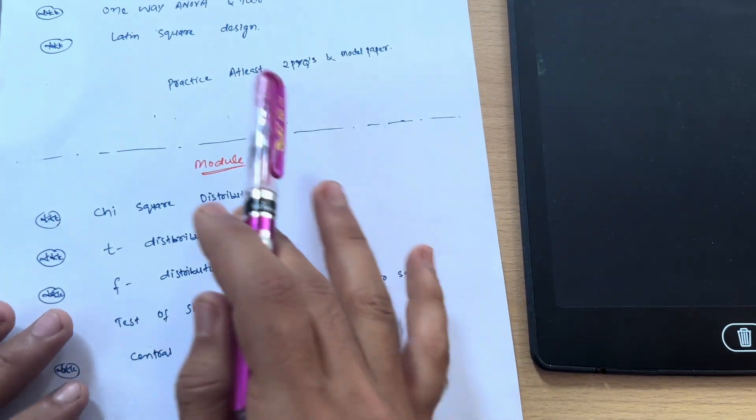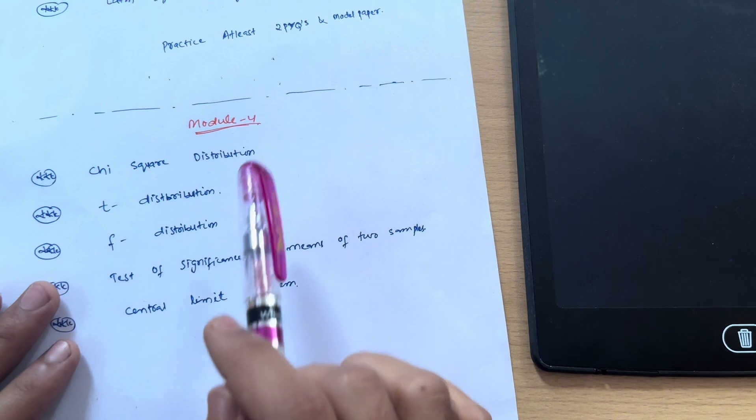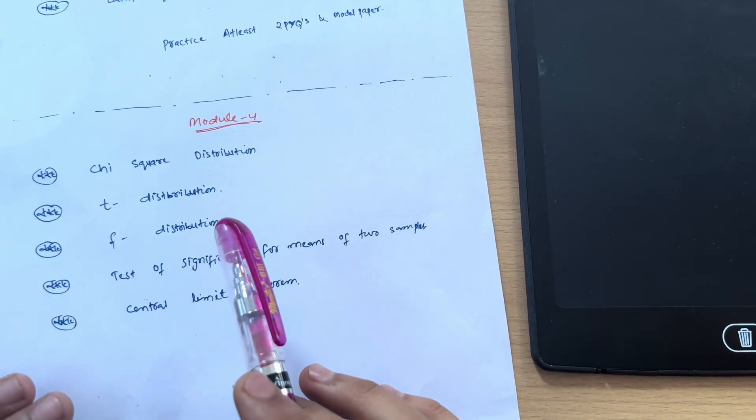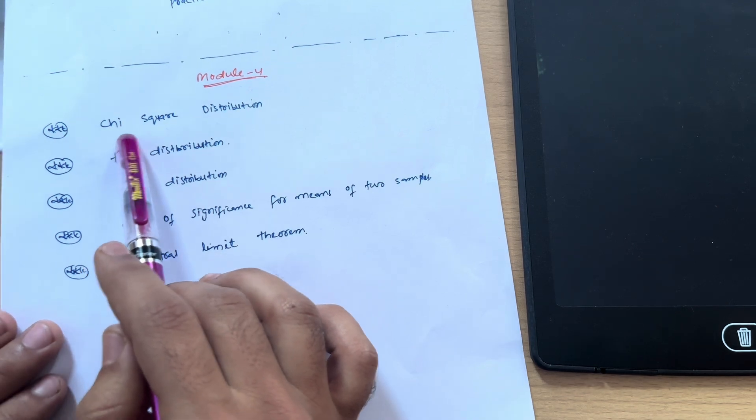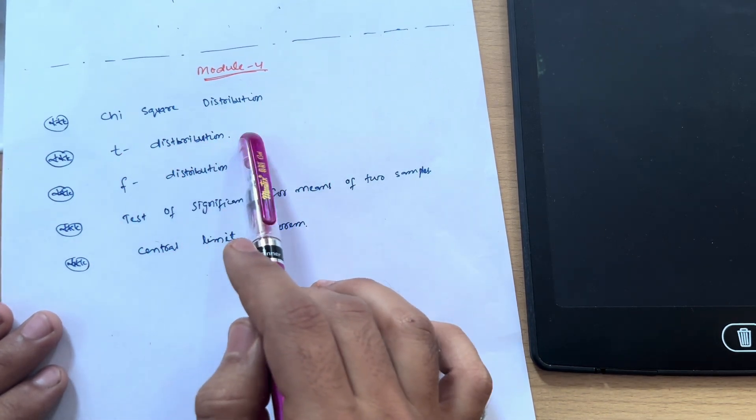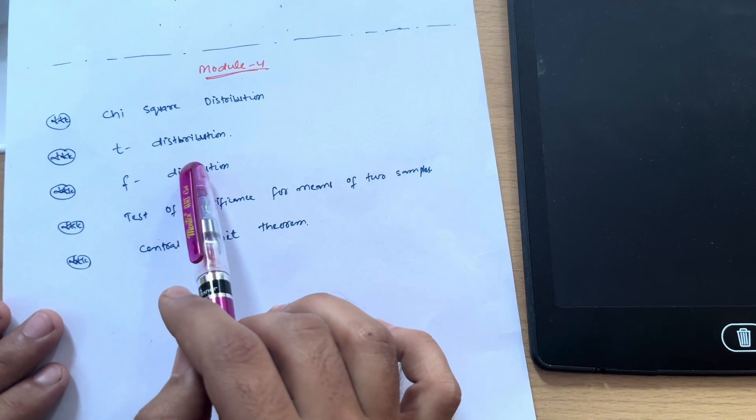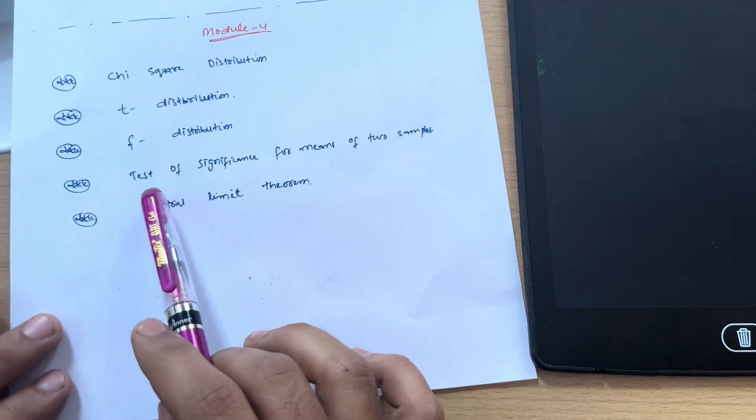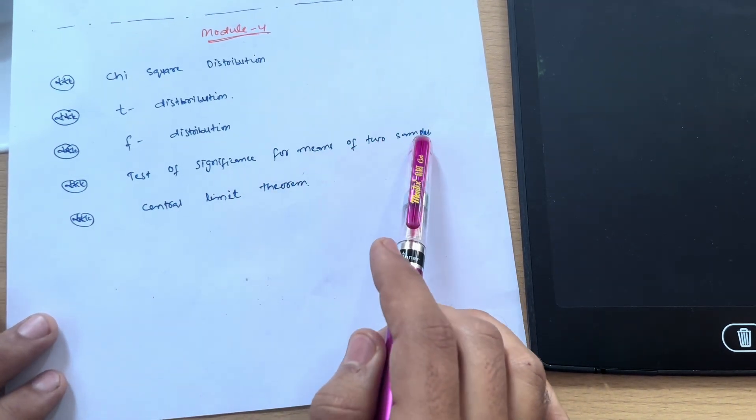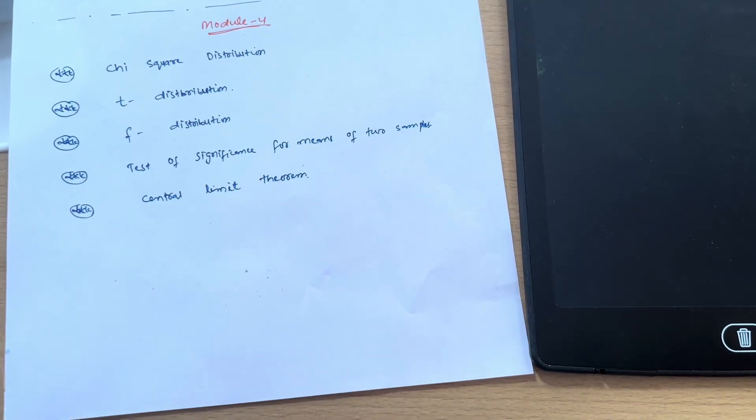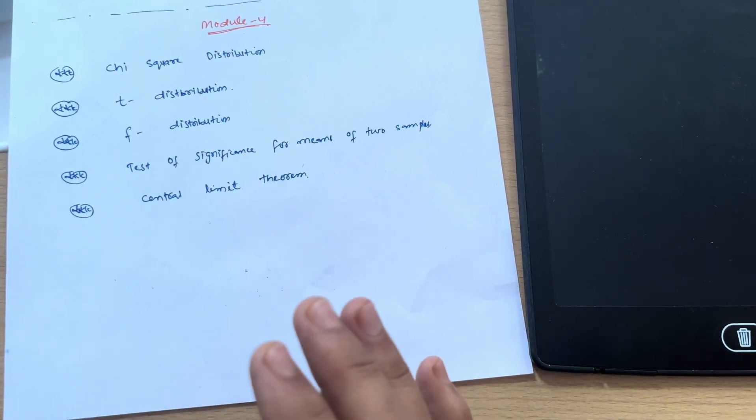Next is Module 4—it is according to your own convenience which topics you will choose, but some simple topics are there: chi-square distribution, t-distribution, and F-distribution. These are very simple ones, go through and practice varieties of problems. Next we have test of significance for means of two samples and central limit theorem. You should have some descriptive knowledge about central limit theorem, and questions will be on it—find the probabilities using central limit theorem.